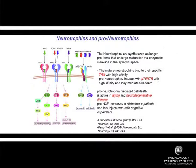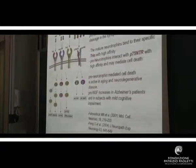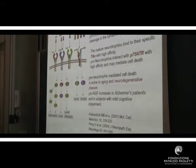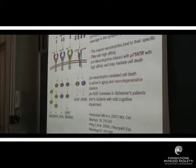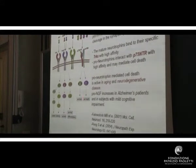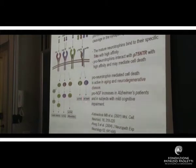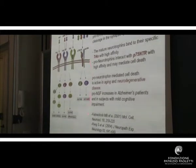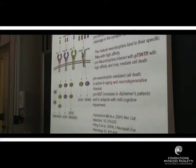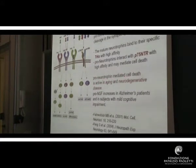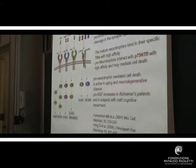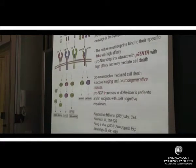The mature neurotrophins bind to the specific TRK receptor, but also the pro-neurotrophins can bind with high affinity to alternative receptors called P75 and sortilin, and it's been recently discovered that they could trigger also apoptotic cell death in some cases. This pro-neurotrophin mediated cell death is active in aging and in neurodegenerative diseases.